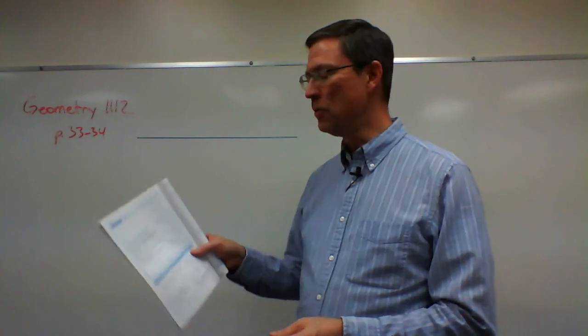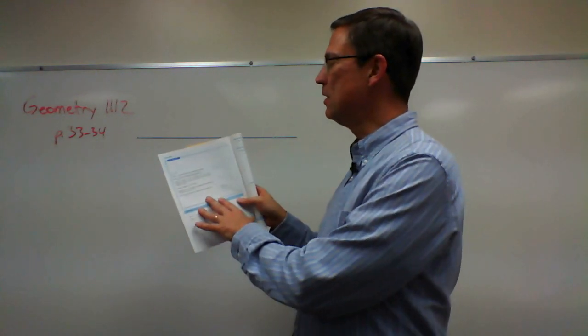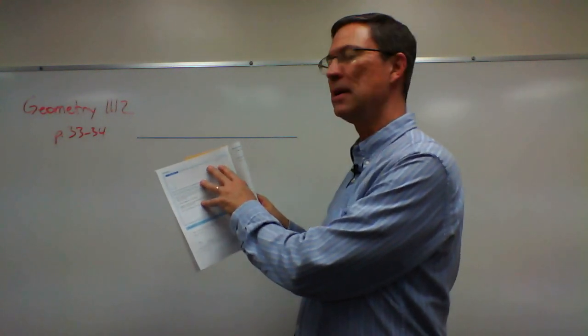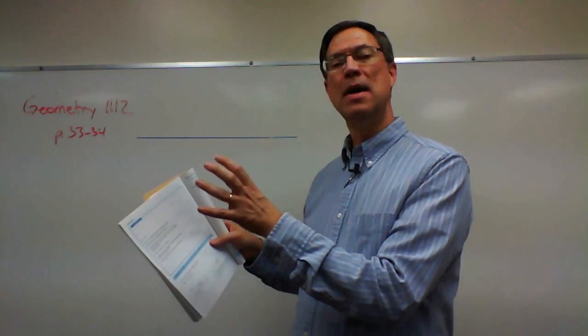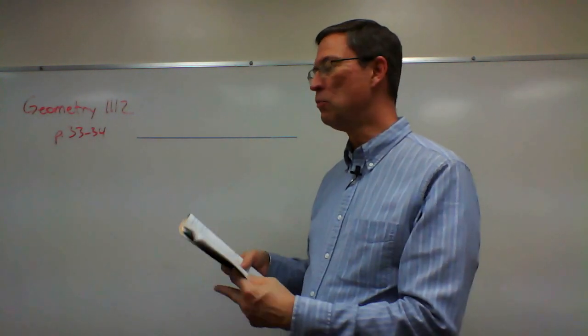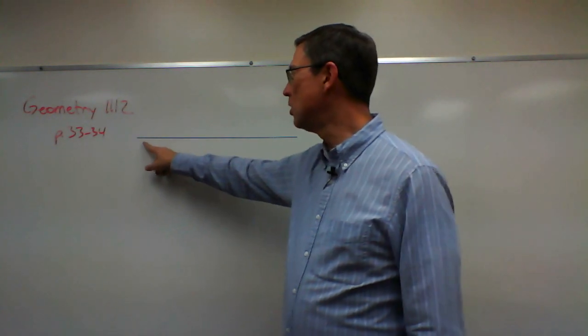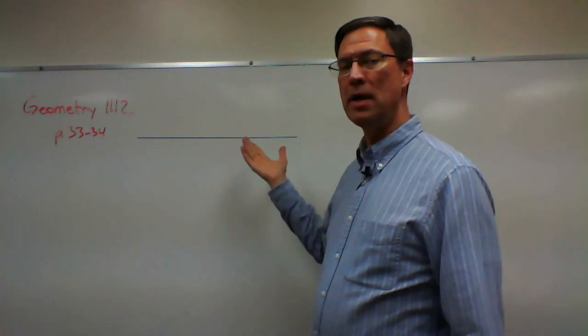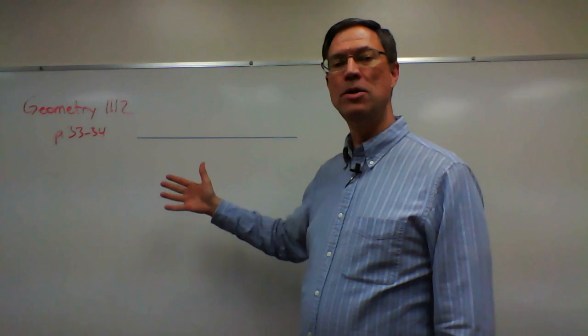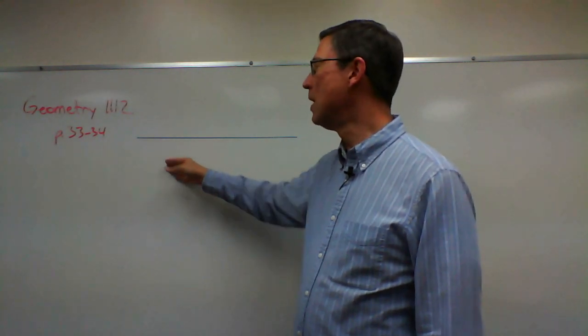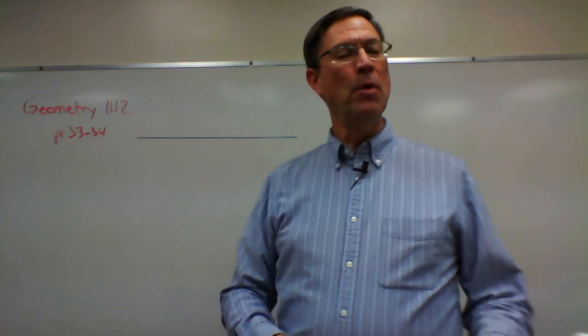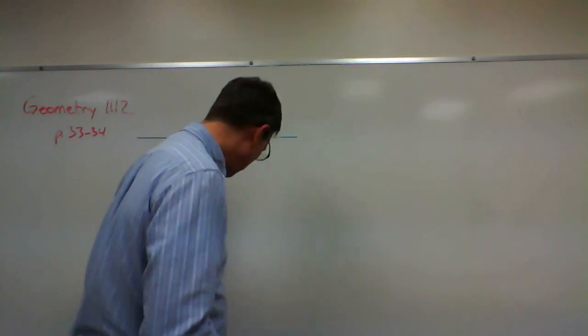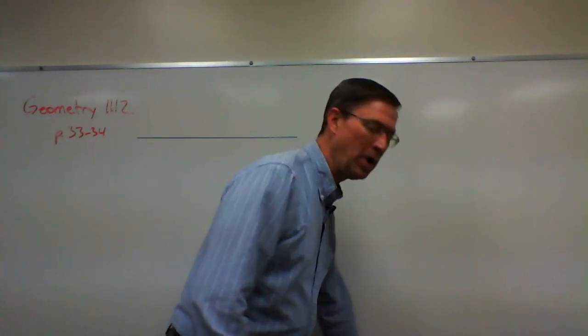Let's look here at page 33. This is a construction of how to take a given line segment and divide it into a certain number of equal parts. You start with just drawing the line segment or it's given to you, and you're asked to find the equal segments. I'm going to walk through it using the whiteboard here and we'll go through the procedure.